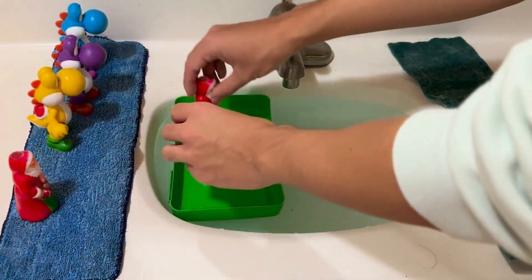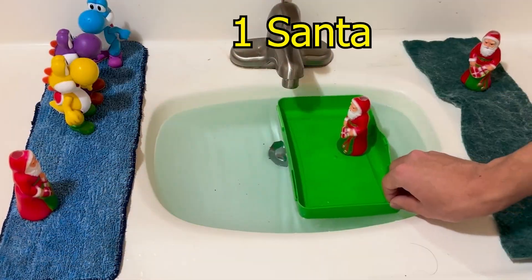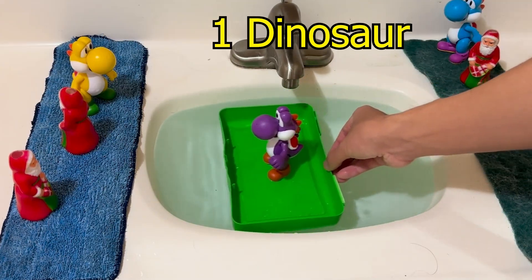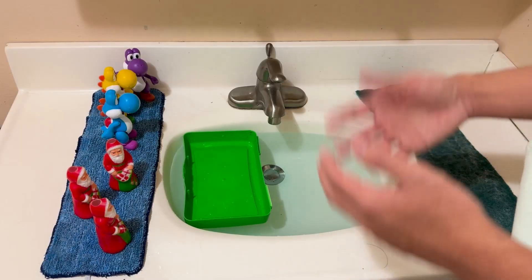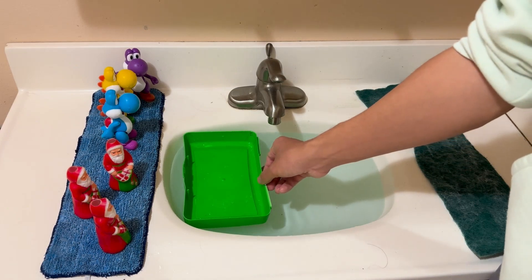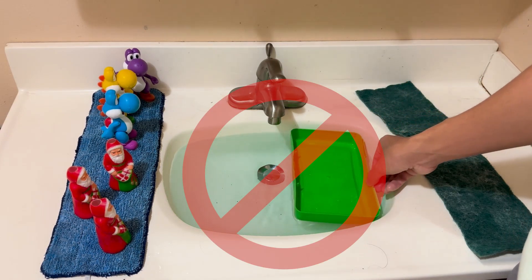So the raft could be steered by two Santas, one Santa, two dinosaurs, one dinosaur, or one of each. With no creatures on board, of course, the raft can't cross the river because there's no one to steer it.